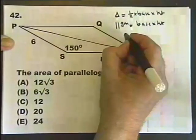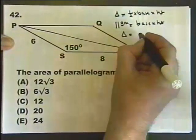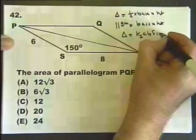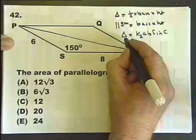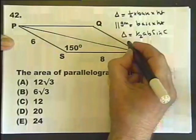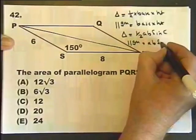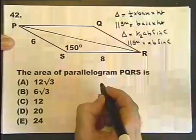However, there's another formula for the area of a triangle. And that's half AB sin C. So the area of the parallelogram is twice that. In other words, the area of the parallelogram is AB sin C. So if you know this formula, the area of a parallelogram...